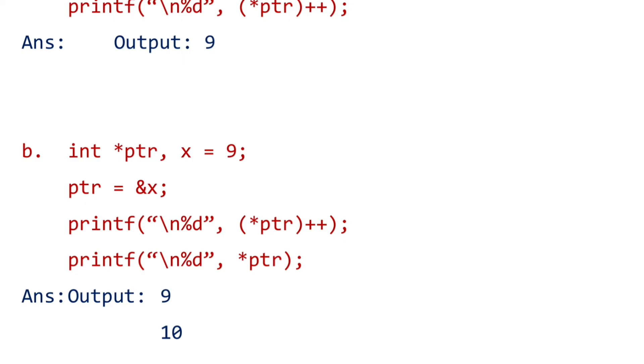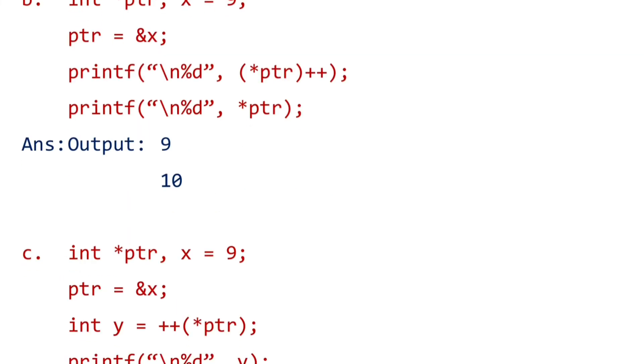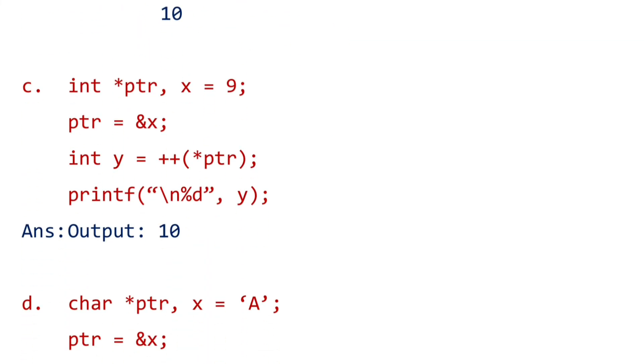Number c: Here integer pointer ptr, and again x is given as 9. Pointer is given the address of x, and one more integer variable y equals plus plus pointer. Plus plus pointer means one plus the value of that variable x. So x is already 9, so we will get the output as 10.